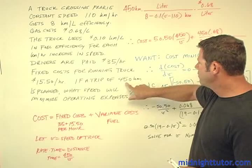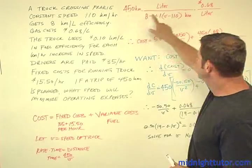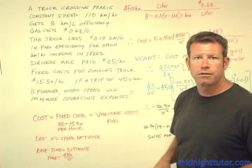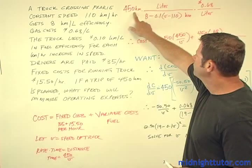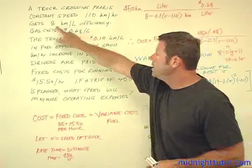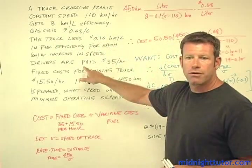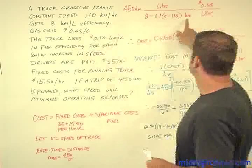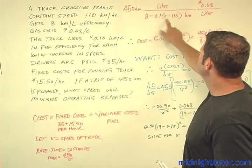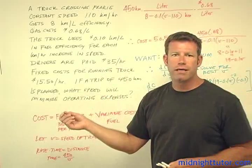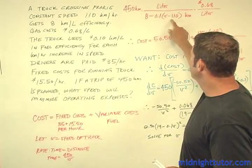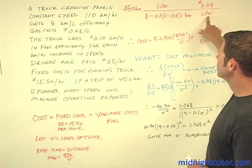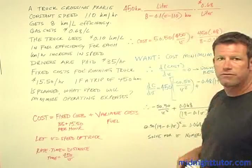I started with the one fact we have — 450 kilometers — and multiplied by other known quantities, trying to cancel units and get to a cost number. Our fuel efficiency starts at 8 but goes down by 0.1 for every kilometer per hour over 110, so we have 8 minus 0.1 times (V minus 110) liters per kilometer. Then we multiply by 68 cents per liter, giving us a measure of fuel cost.